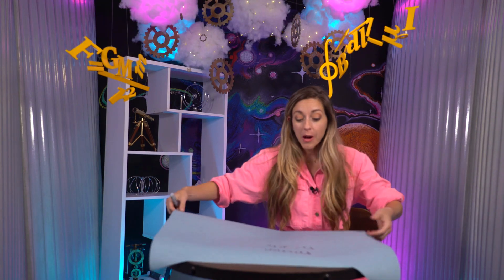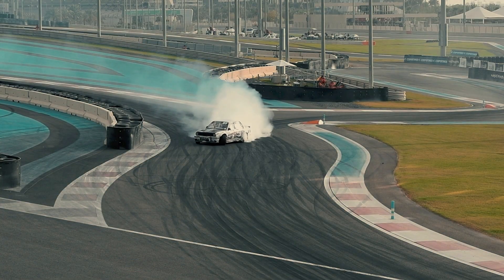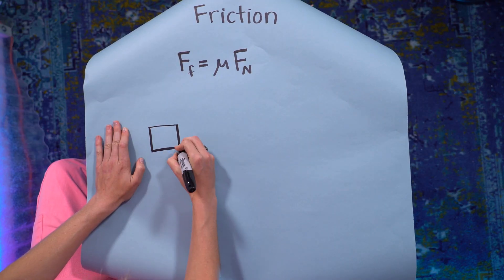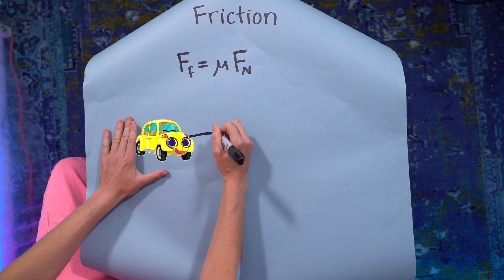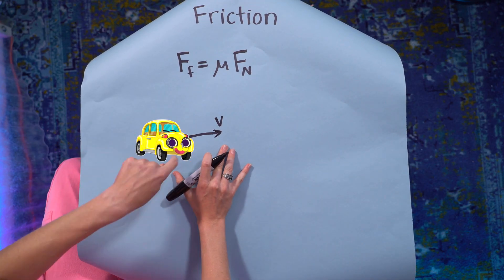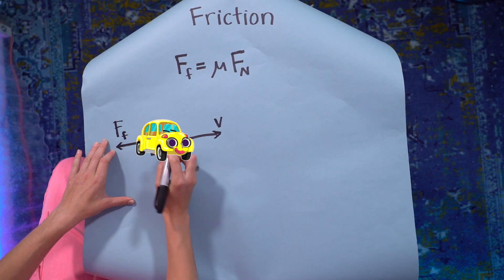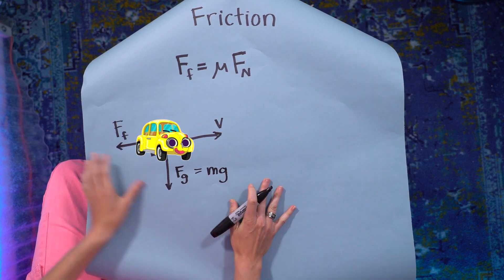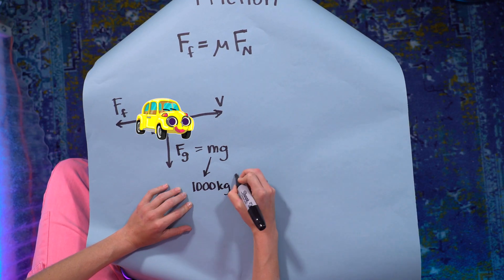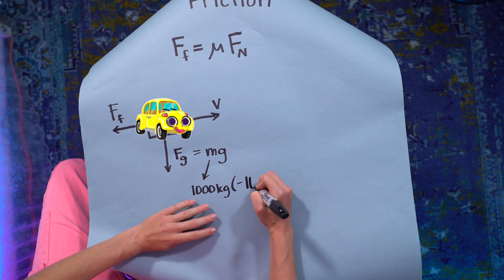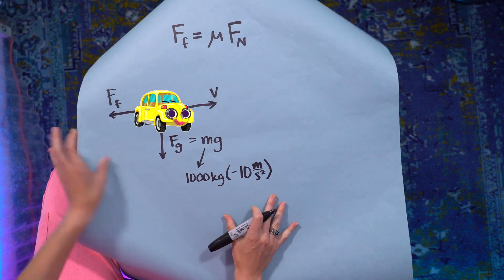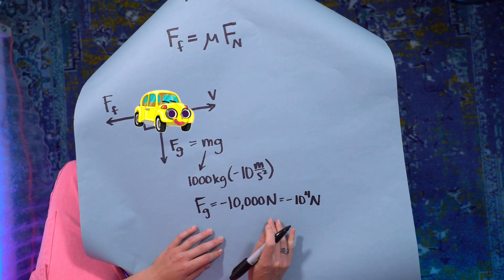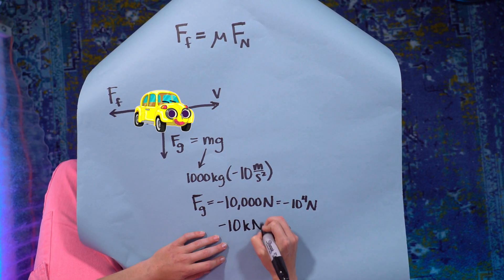Let's jump into an example: a car using its brakes. You slam on the brakes so the tires lock and you screech across the concrete road. We'll use our tool, the free body diagram. The car is moving in one direction, so the friction force will be in the opposite direction. We know there's a force of gravity pulling down on the car — that's mass times g. The mass of our car is about 1,000 kilograms, and g is −10 m/s², so our downward force is about −10,000 newtons, or −10 kilonewtons in scientific notation.